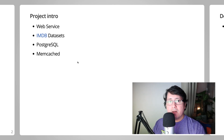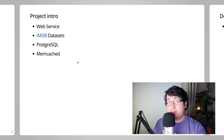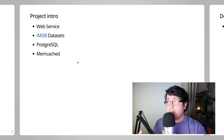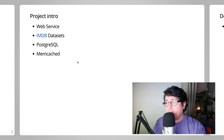The project consists of building a web service using the IMDB datasets, specifically the name dataset. It uses PostgreSQL as a datastore and obviously Memcached. All the code that you're going to be seeing right now is available on GitHub — the link is in the description as well.